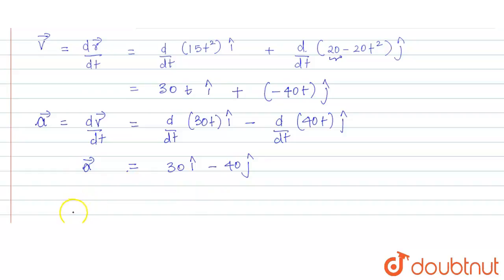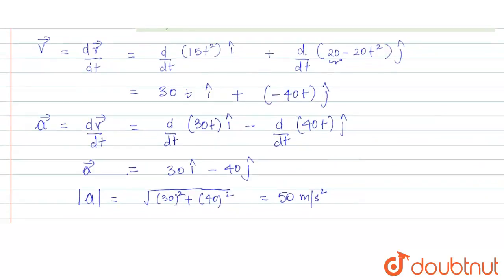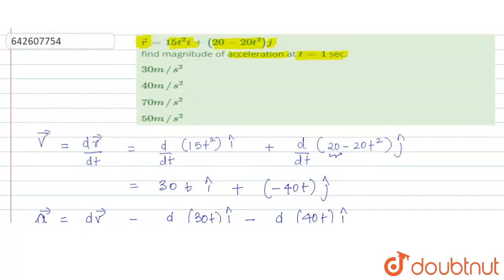Now as we can see, this acceleration vector is independent of time. So at any time, we have to find out its magnitude. So its magnitude would be root of 30² + 40², and that results in 50 meters per second squared.